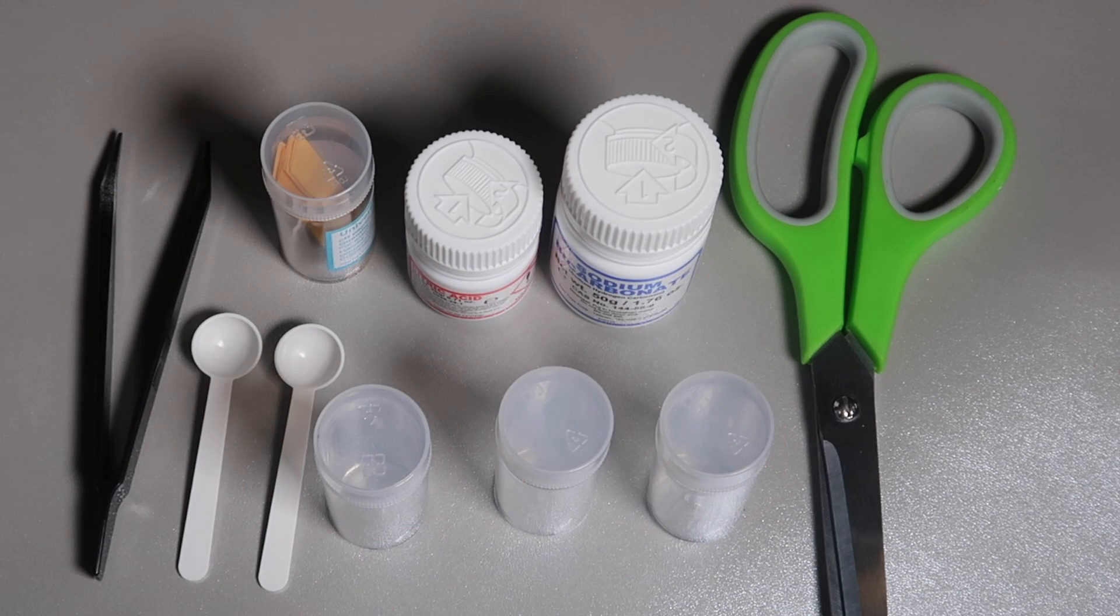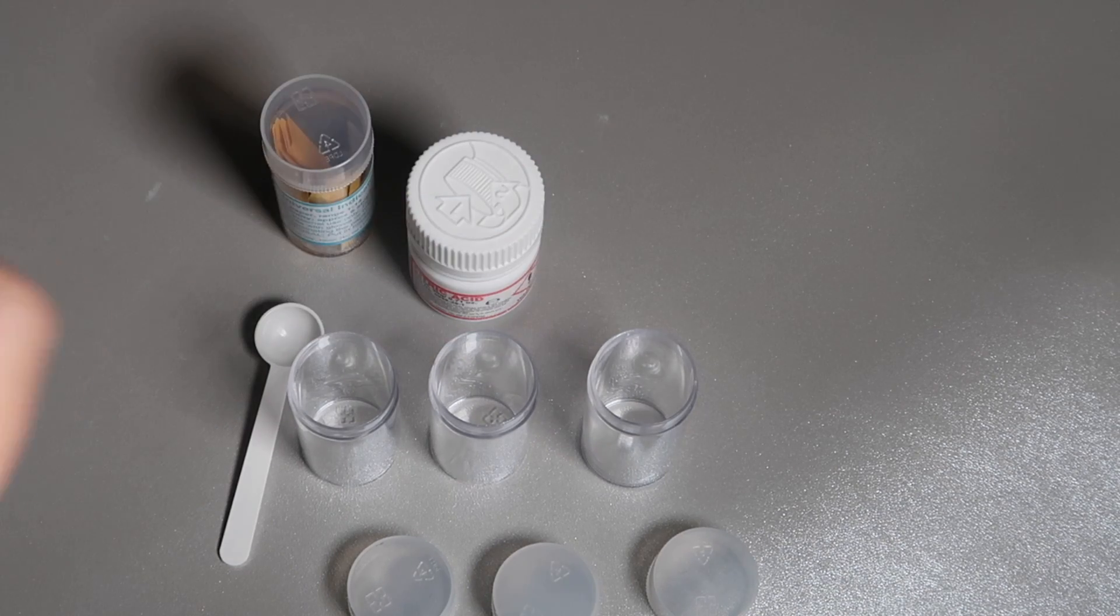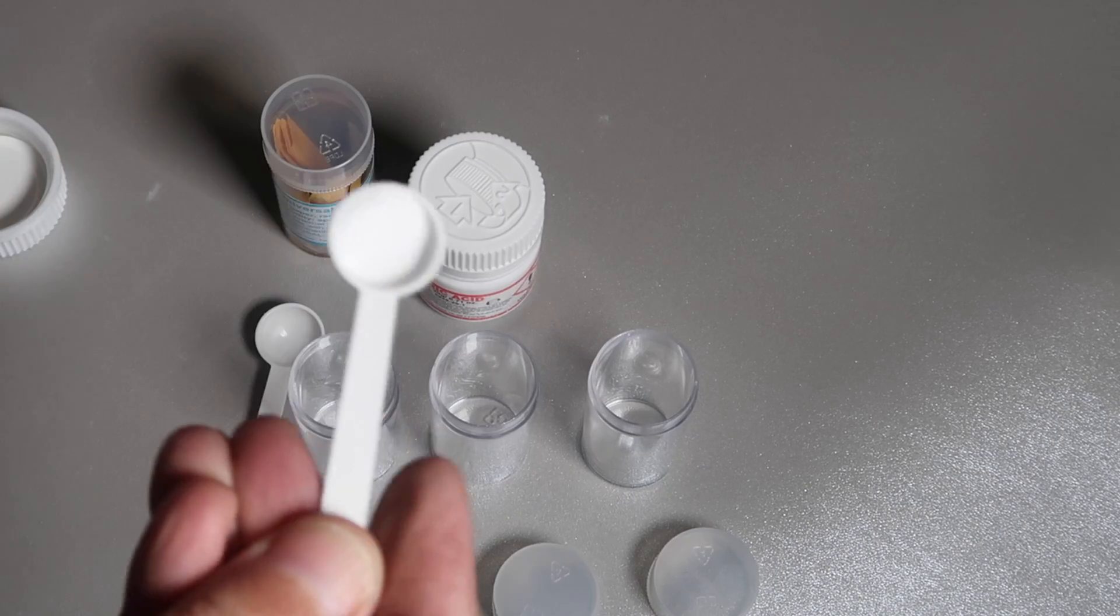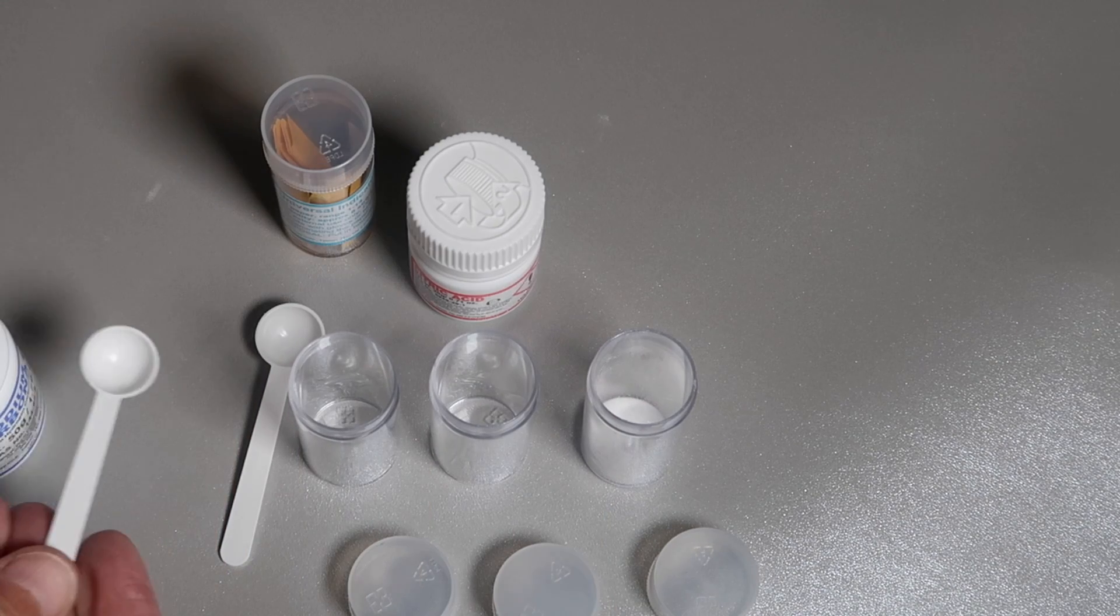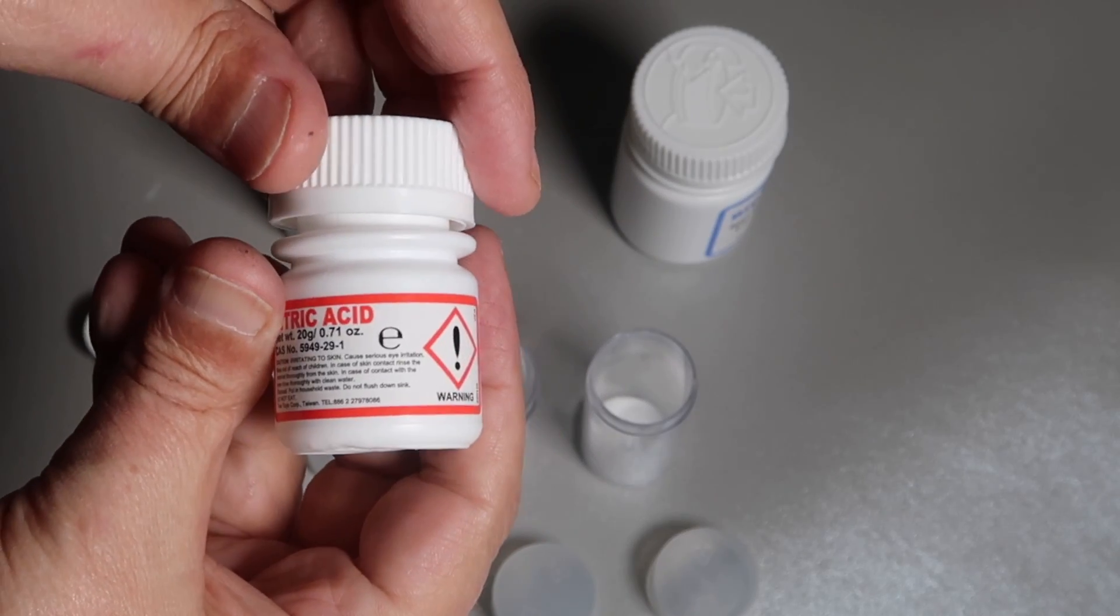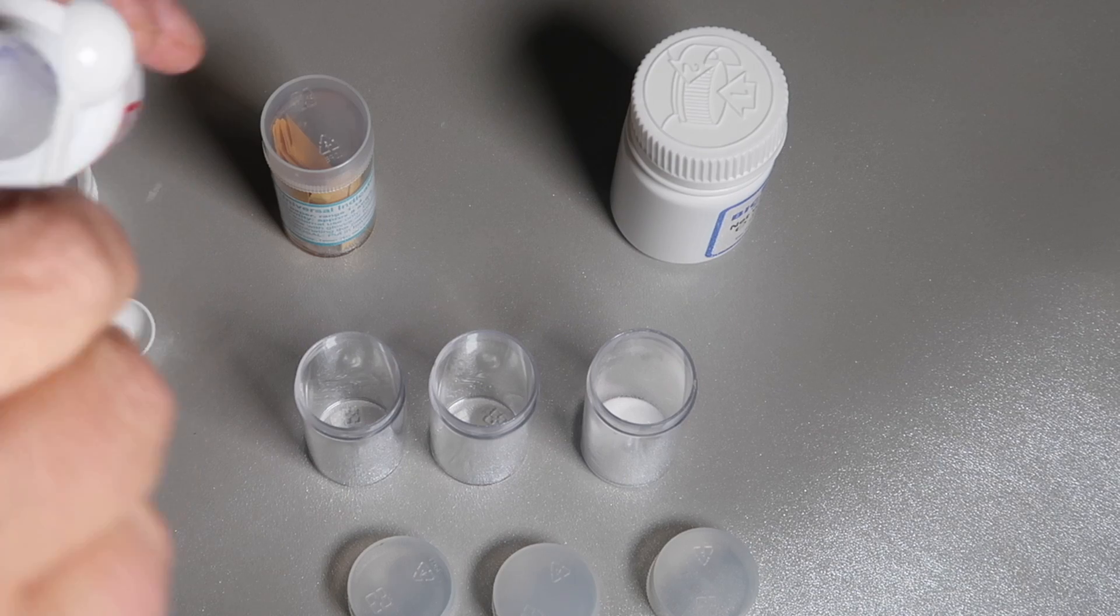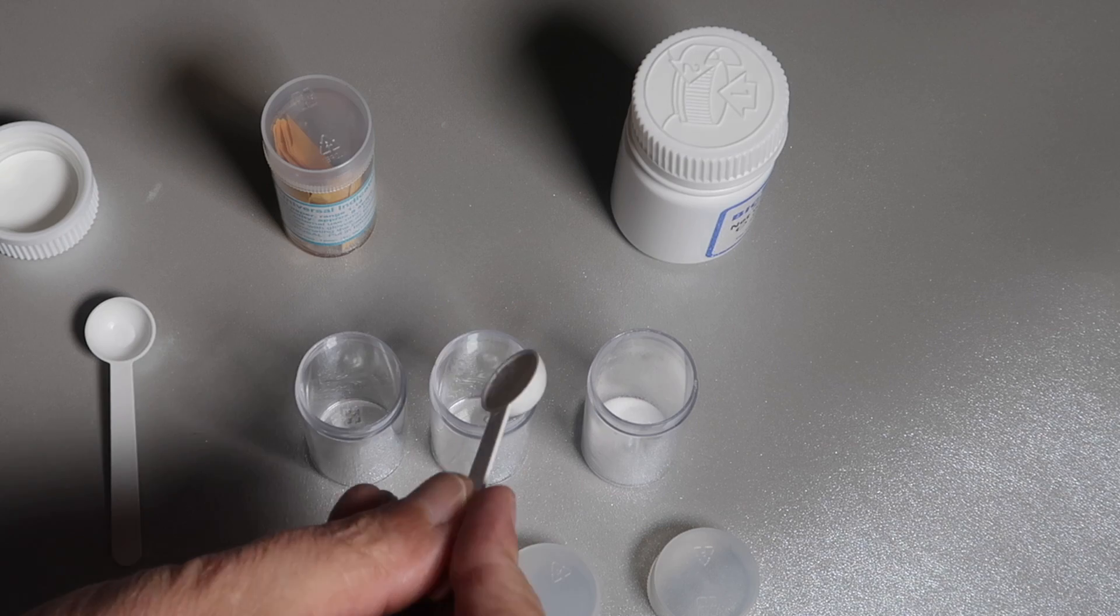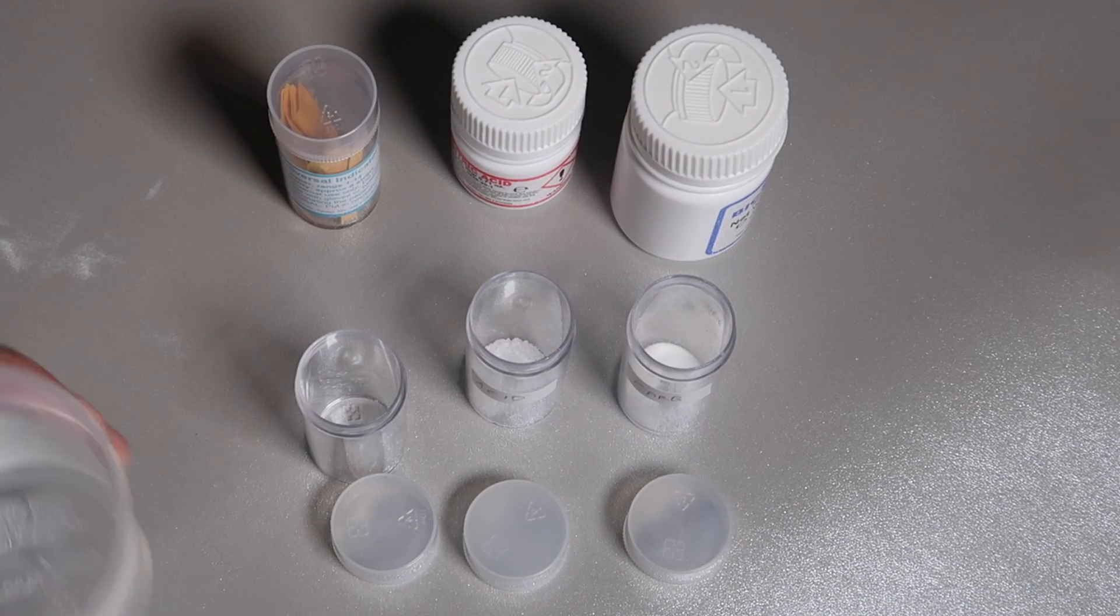So first, we're going to add one spoon or half a spoon of sodium bicarbonate to one of these tubes. And then we're going to add the citric acid to another one of the tubes. Carefully not reusing the same measuring spoon, of course. And then the third one, we're going to leave neutral. And then we're going to add water to all three tubes.